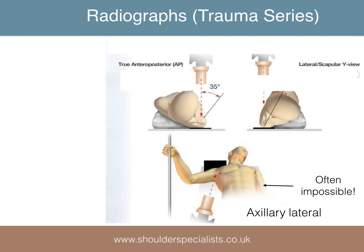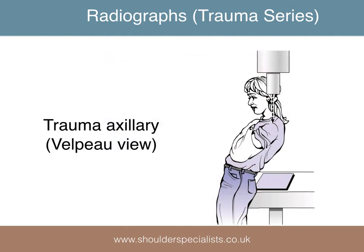The correct radiographs are needed for the initial assessment of these injuries, and are often supplemented by a CT scan. The standard views are a true AP of the glenohumeral joint, a lateral scapular view, and an axillary view. A routine axillary view is often very difficult to obtain in the trauma situation. Instead we usually obtain a trauma axillary view, such as a VELPO view, as shown.